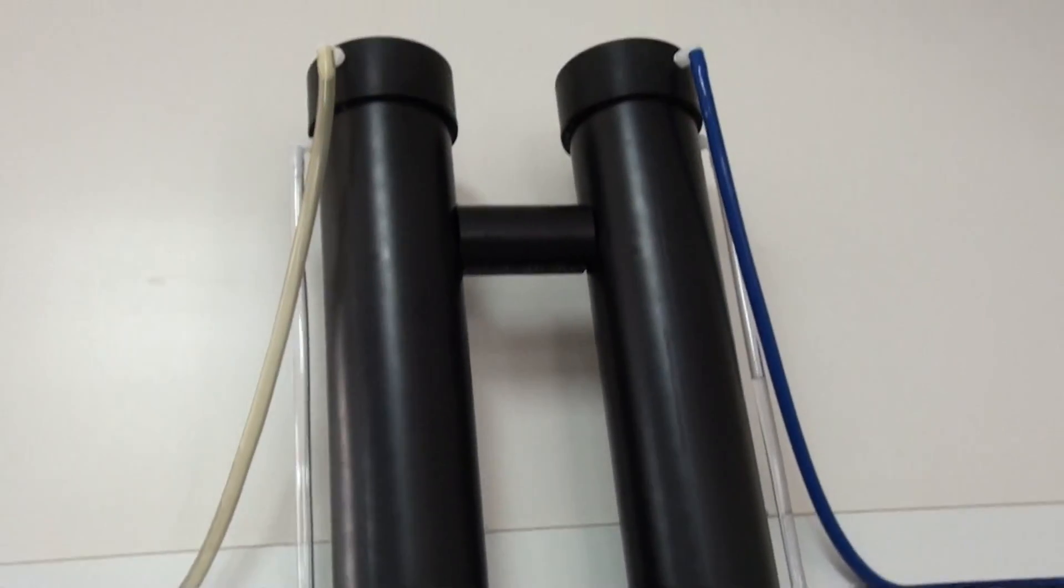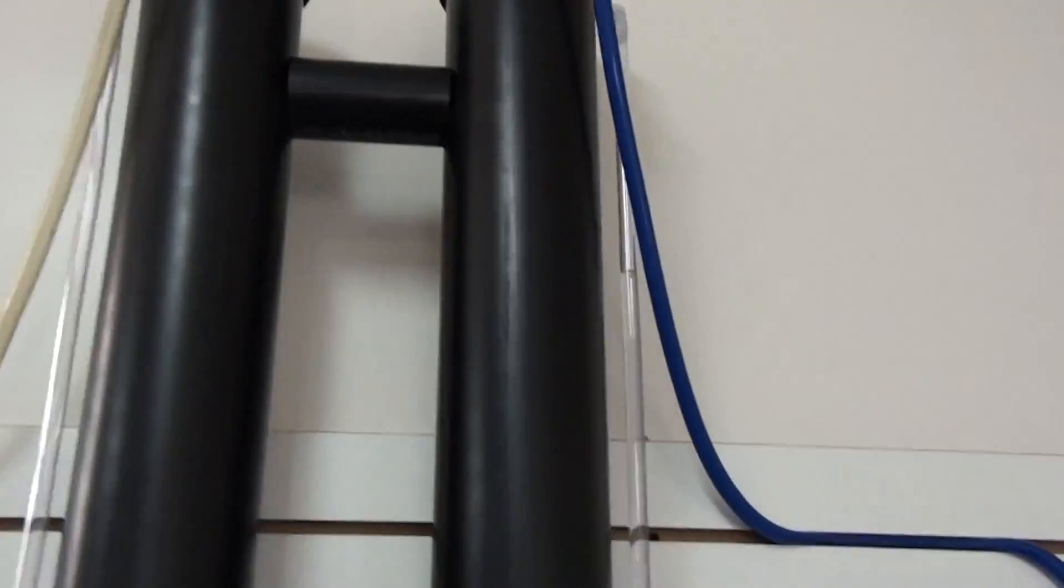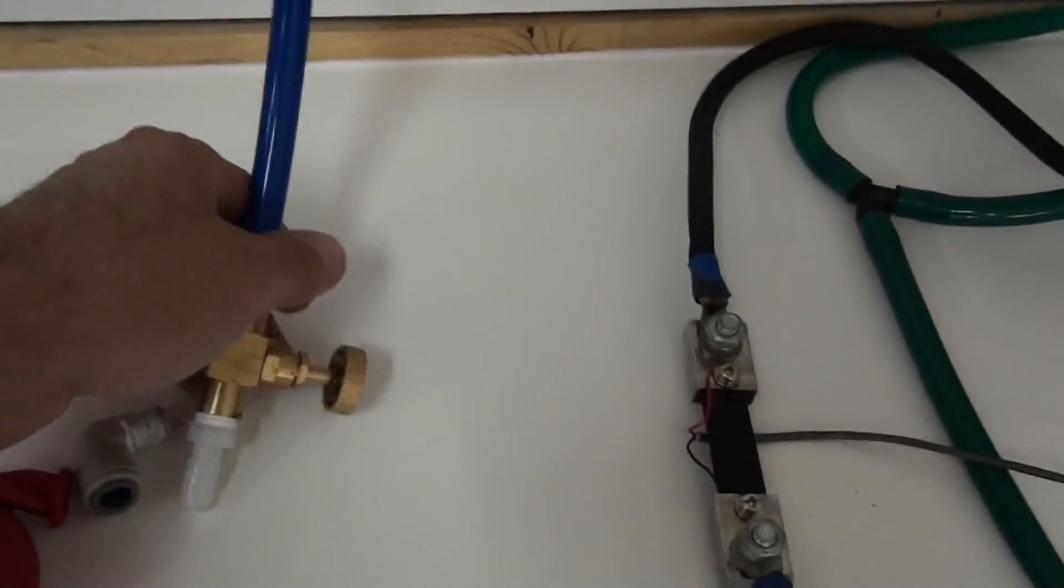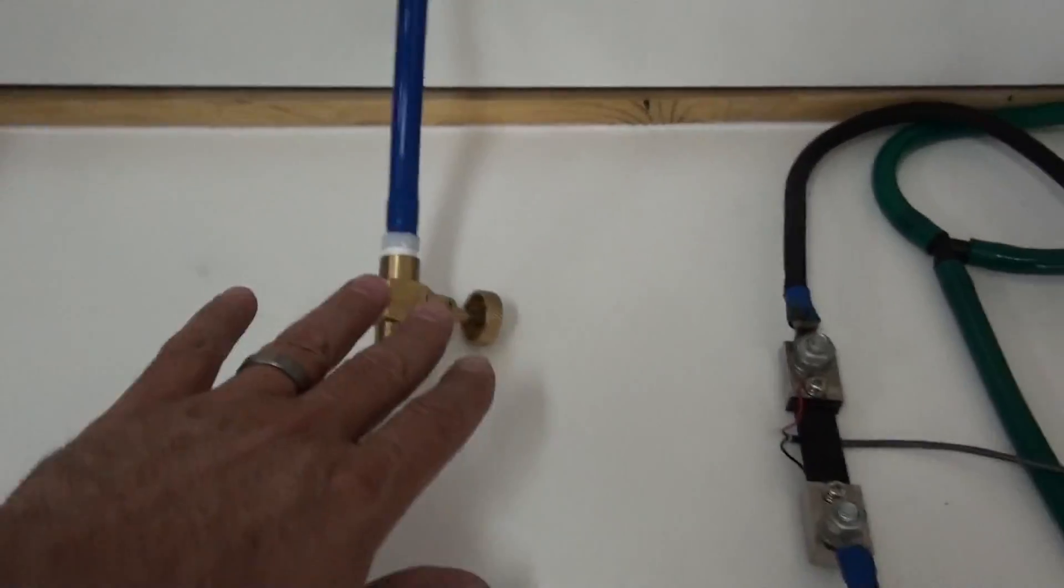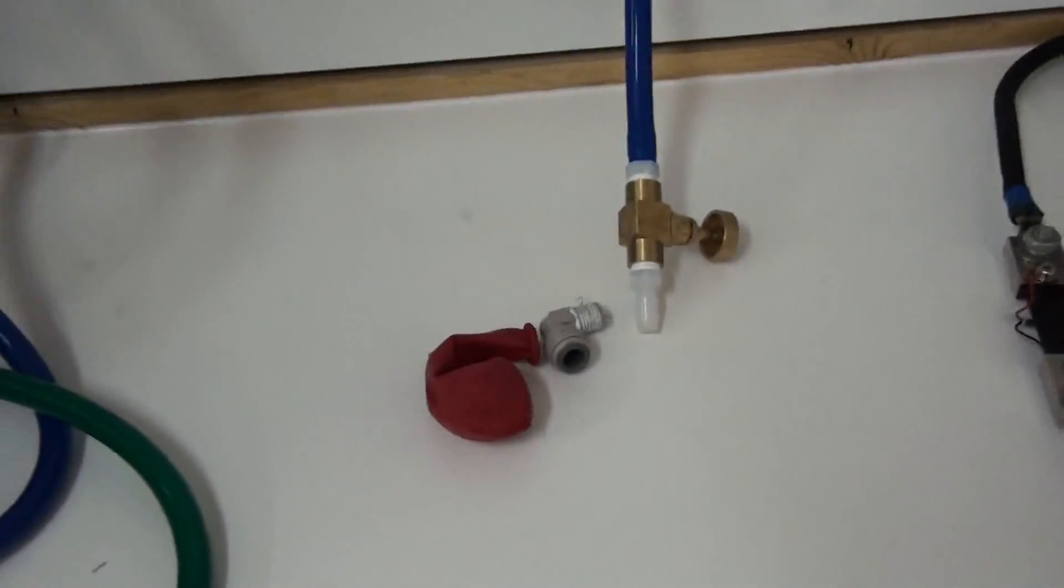So out of the oxygen side, let's do the oxygen side first. Out of the oxygen side I just have a tube comes down to a needle valve. We can adjust this needle valve to put more pressure on the oxygen side.